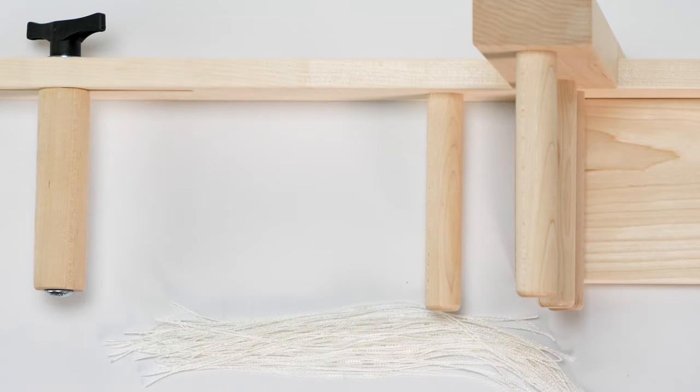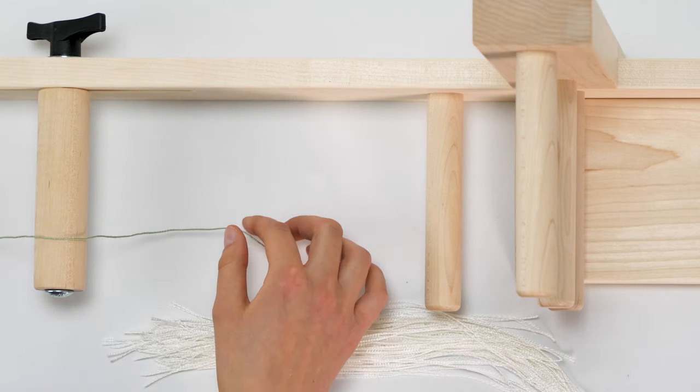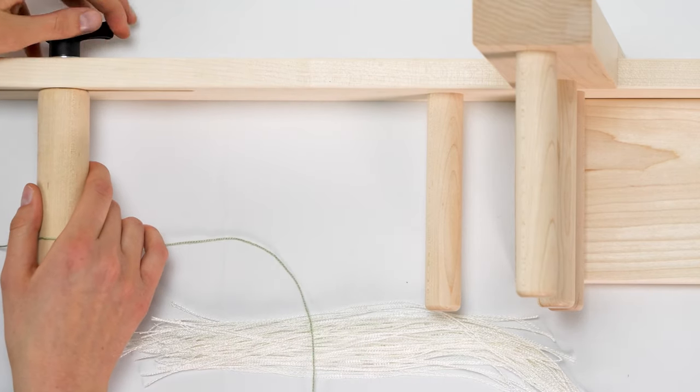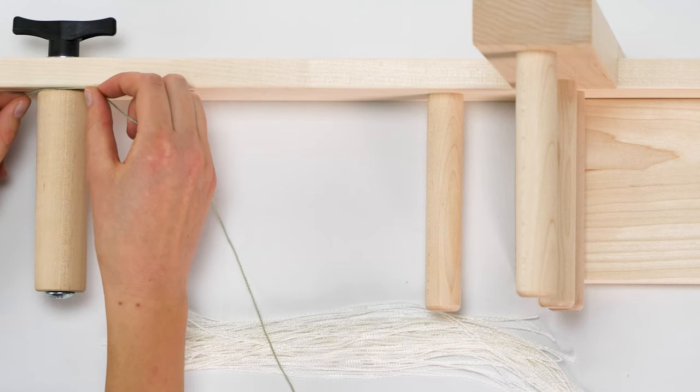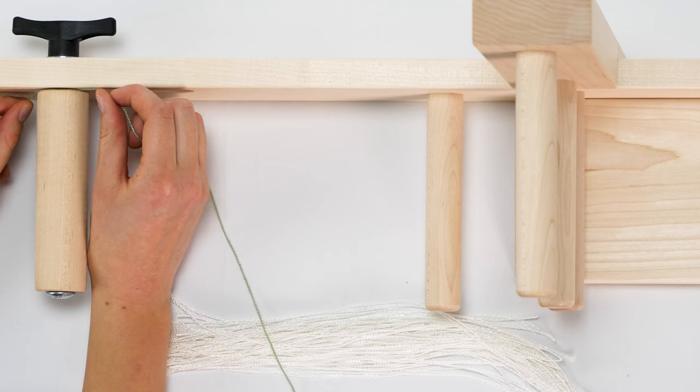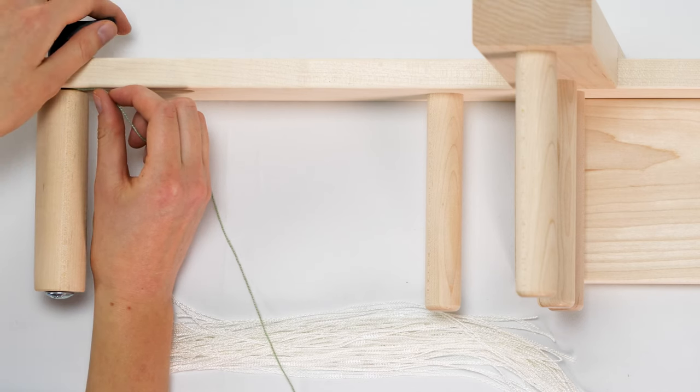Another option is one that a student taught me. She had the idea to place the yarn in between the tension peg and the loom side. Leave an 8 inch tail and loosen the tension knob slightly. Slip the thread into the space between the loom and the tension peg.